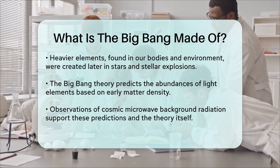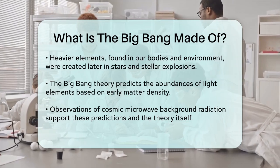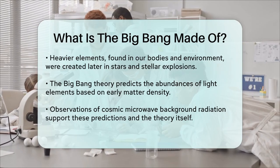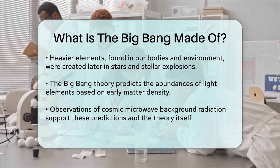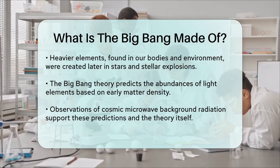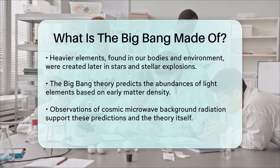So, to sum it up, the Big Bang universe was primarily composed of hydrogen and helium, with trace amounts of deuterium and lithium. This simple yet precise composition is a cornerstone of the Big Bang theory and helps us understand how our universe came to be.